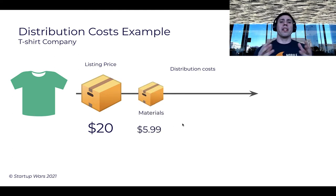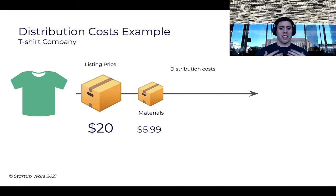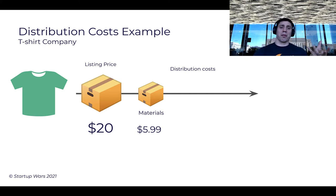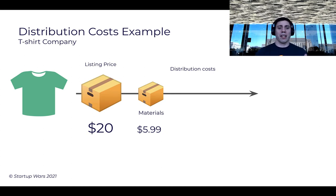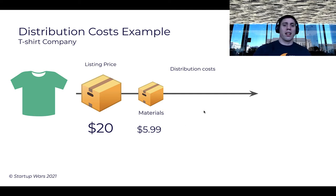What do you need in order to create a t-shirt? Well, you need the actual t-shirt itself. If a customer purchases your t-shirt and says they'd love to buy it with a specific design, you say okay, for $20 I'll print it. So you go behind the scenes, take a blank white t-shirt, apply the design, print it, and send it out. That material — the actual t-shirt itself — costs you money. If we estimate the cost of materials at about $5.99, and we start at $20, we're now down to about $14.